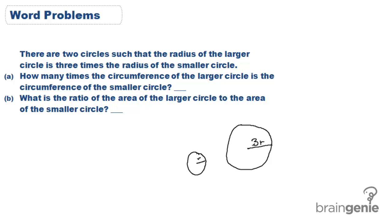I drew them out here for you. The one on the left, the radius is labeled r, and the one on the right is labeled 3r. How many times the circumference of the larger circle is the circumference of the smaller circle?